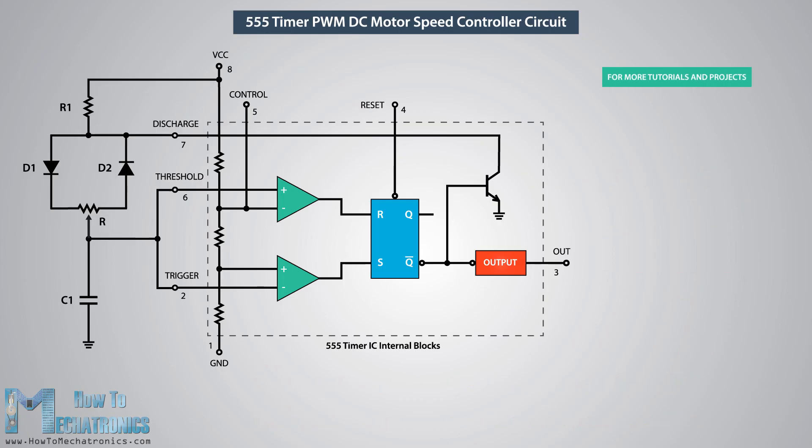Usually the R1 resistance is much smaller than the resistance of the potentiometer, for example 1K compared to 100K of the potentiometer. In that way we have 99% control over the charging and discharging resistance in the circuit.